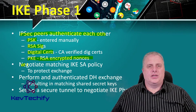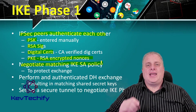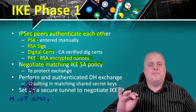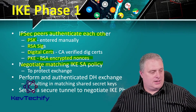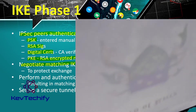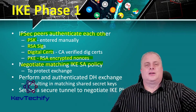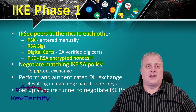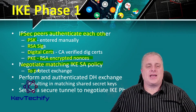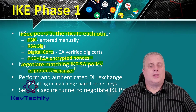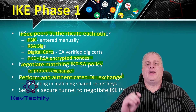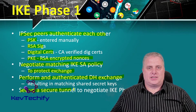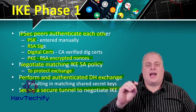The second step is to negotiate a matching IKE Security Association policy. This is the main goal of IKE Phase 1: to generate an IKE Security Association or policy, which protects that exchange. The third step is to perform an authenticated Diffie-Hellman exchange, resulting in matching shared keys. And lastly, set up a secure tunnel to negotiate IKE Phase 2.